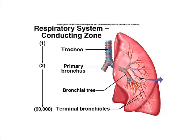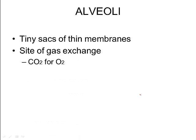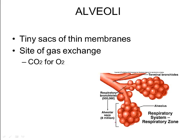Here's another picture showing the trachea branching off into two bronchi, then into smaller and smaller bronchioles. You could have up to 60,000 tiny branches inside your lungs. Those branches end at tiny structures called alveoli — tiny sacs of thin membranes that are the site of gas exchange in your lungs. We exchange carbon dioxide for oxygen here: breathing in oxygen and breathing out carbon dioxide. You could have up to 8 million of these little air sacs inside each lung — they almost look like bunches of grapes.